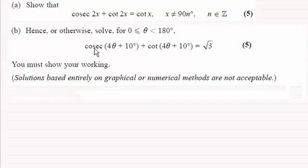Well, when I compare this equation here with what we had to prove up here, I can see that it's got the same basic form on the left-hand side as what we have here, only that 2x is exactly the same as the 4 theta plus 10 degrees.